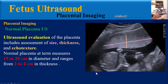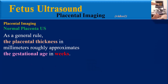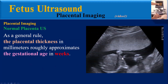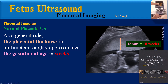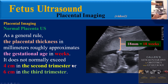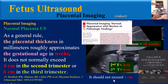Normal placenta at term measures about 15 to 20 cm in diameter and ranges from 2 to 4 cm in thickness. As a general rule, the placental thickness in millimeters roughly approximates the gestational age in weeks. A reliable reference believes it doesn't normally exceed 4 cm in the second trimester and 6 cm in the third trimester, but many papers believe it should not exceed 4 cm.